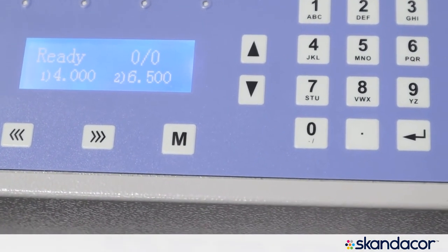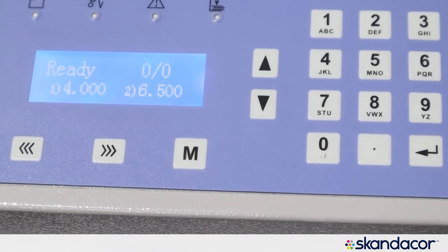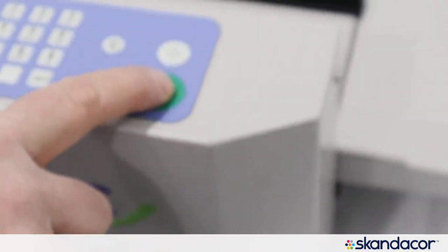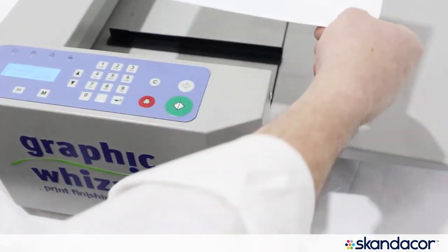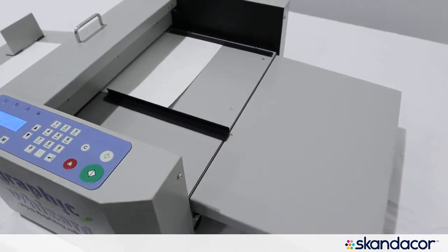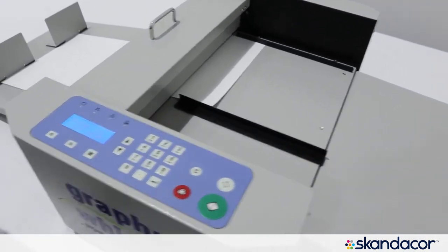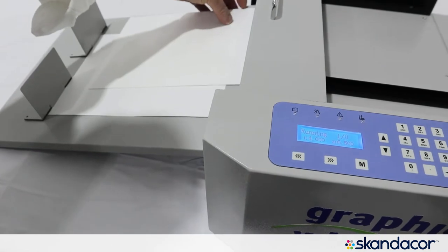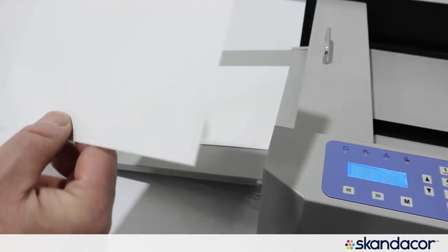So I now have the three creases programmed and in order to run that job, I can simply take my piece of paper, I can push the start switch and I can put my paper in and feed it through and run it. And it stops and does those three creases at the correct spots.